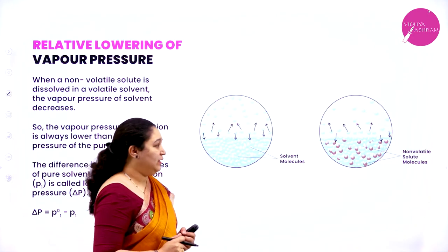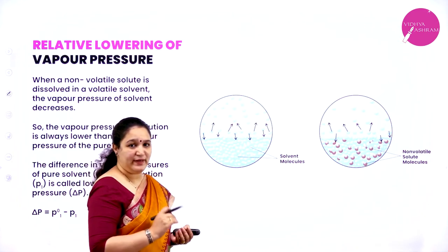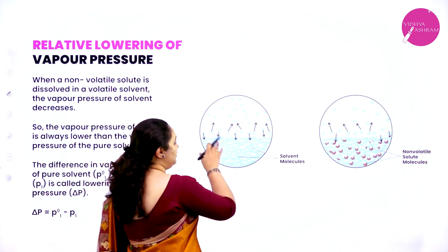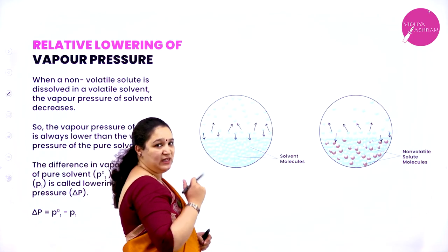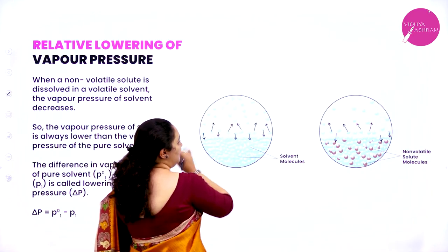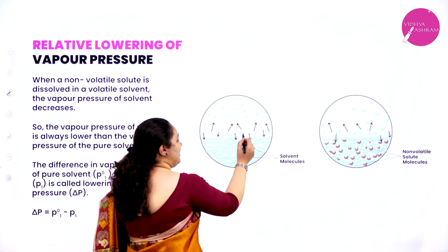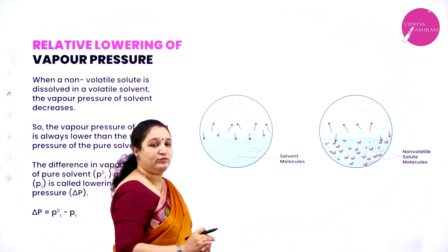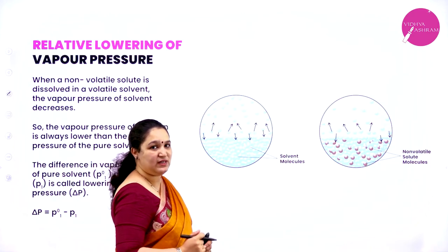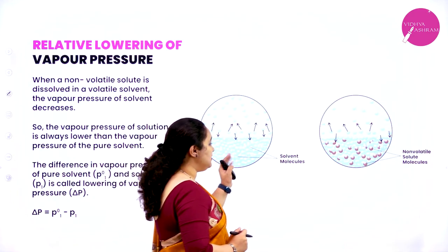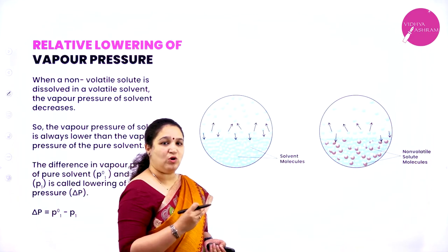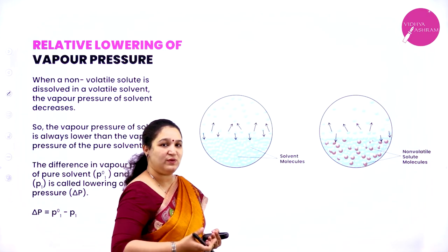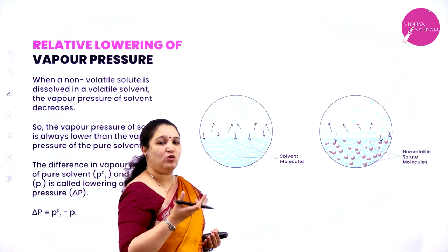Let me take an example. I have a pure solvent. Some of the particles from the solvent — that is, the liquid — will escape and go to the vapor phase, and they will exert some pressure on the surface, which we call the vapor pressure of the pure solvent. Now, to this solvent I shall add some amount of non-volatile solute. Non-volatile means the solute particles will not vaporize; they will not go to the vapor phase.